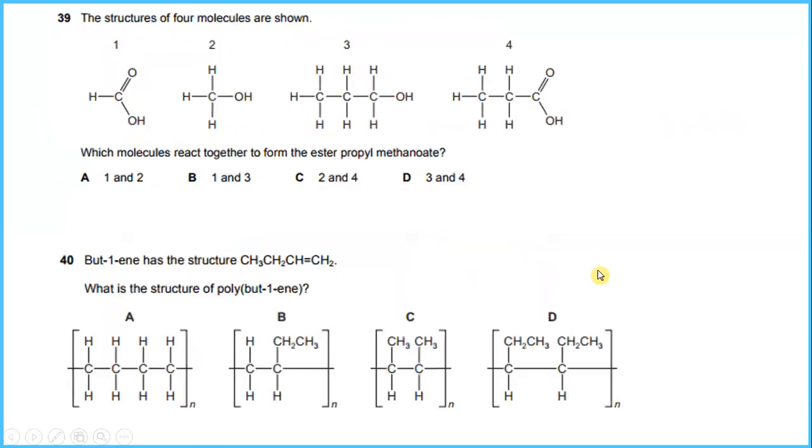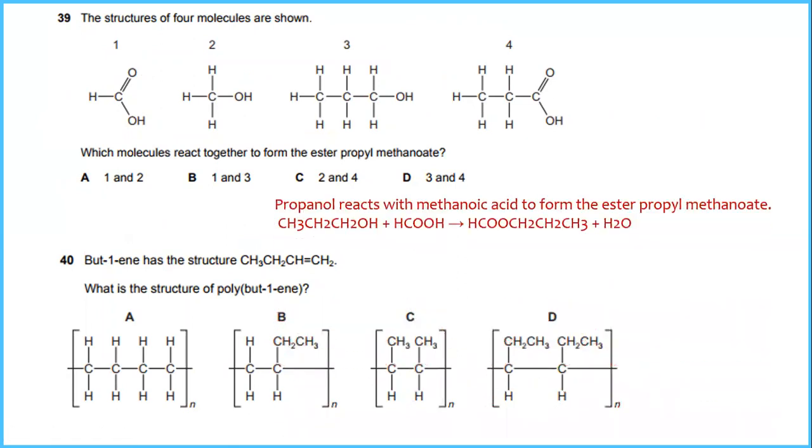The structures of four molecules are shown. Which molecules react together to form ester propyl methanoate? Propanol reacts with methanoic acid to form the ester propyl methanoate. This is the chemical reaction - a combination of number 1 and number 3. So the answer will be B.